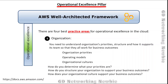The foundational questions for the organization area include: How do you determine what your priorities are? How do you structure your organization to support your business outcomes? How does your organizational culture support your business outcomes? The detailed context and best practices are provided in the AWS documentation linked in the description.